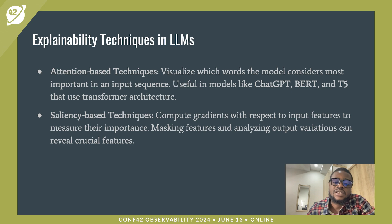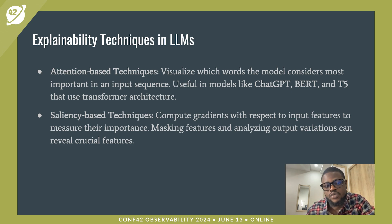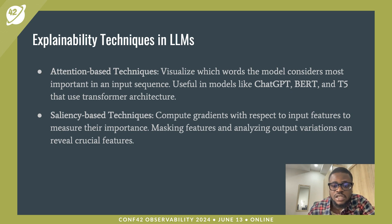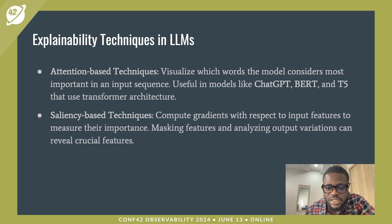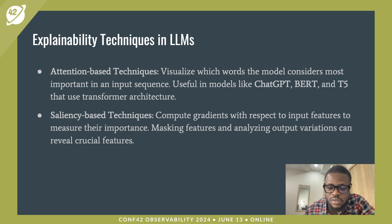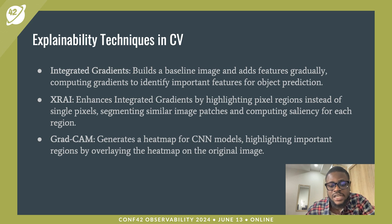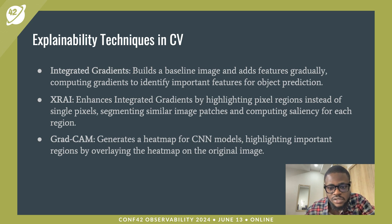Let's talk about explainability techniques in large language models. We have attention-based techniques, where we visualize which words the model considers most important in an input sequence. This is useful in models like GPT, BERT, and T5 that use transformer architecture. We also have saliency-based techniques, which compute gradients with respect to input features to measure their importance. Masking features and analyzing output relations can reveal crucial features.